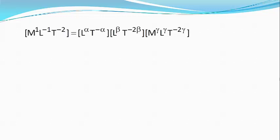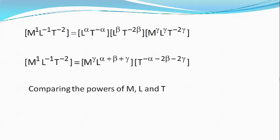Or M raised to power 1, L raised to power minus 1, and T raised to power minus 2 equals M raised to power gamma, L raised to power alpha plus beta plus gamma, into T raised to power minus alpha minus 2 beta minus 2 gamma. Comparing the powers of M, L and T, we get gamma equals 1.